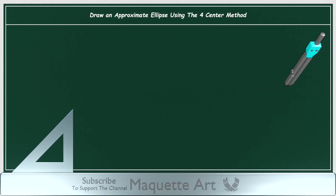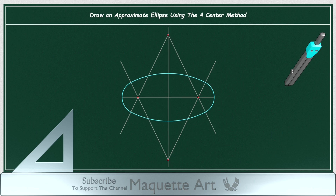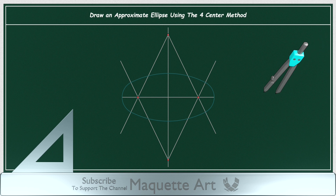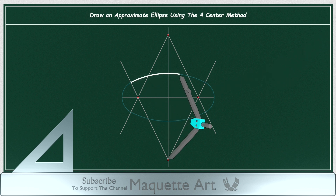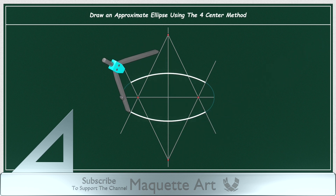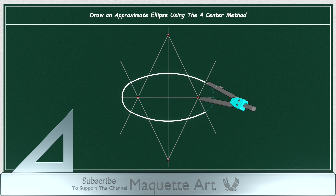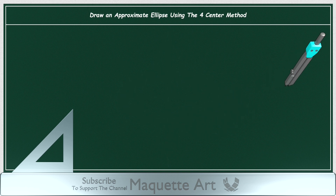I will explain how to draw an approximate ellipse using the four-center method. This method uses four points as the center of the compass to draw four arcs that form the ellipse. Let's see how this is done.